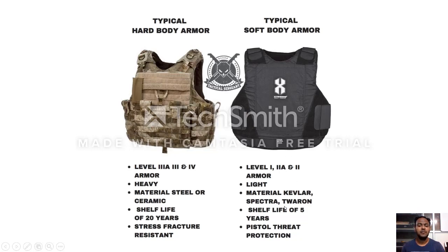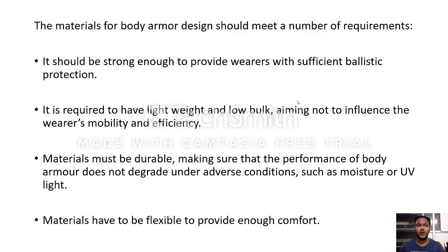Soft body armor is made up of materials like Kevlar or Twaron, which is a Kevlar-type material. It has a shorter shelf life of only about five years and provides pistol-threat protection only — it does not give high-risk protection. It can only protect from threats from normal handguns like pistols. The materials for body armor design are expected to meet a number of requirements.